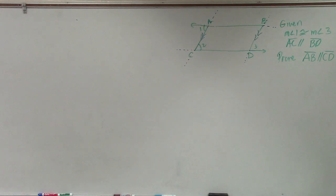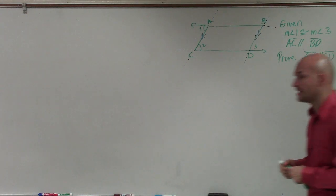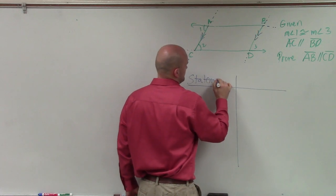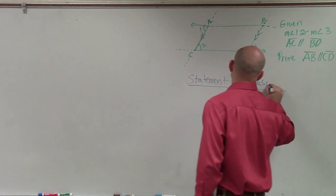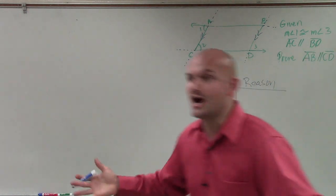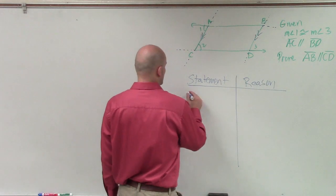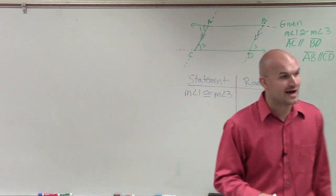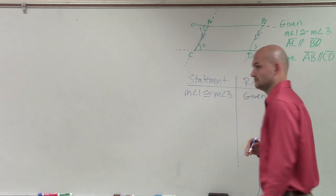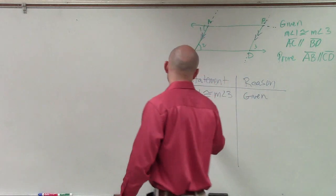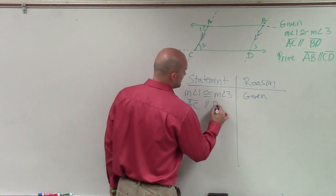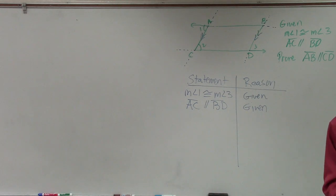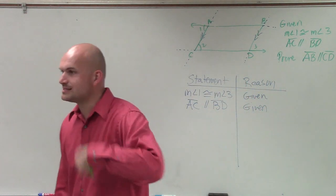So now what we're going to do is write a proof. We're going to create two columns — statement and reason. Remember, ladies and gentlemen, the first thing we can do is take all the information that we are given and write it in there. So the first thing I'll write is: measure of angle 1 is congruent to measure of angle 3 — reason: given. We're also given that line AC is parallel to line BD — reason: given. Do you guys see how easy starting off the proof can be? Take your initial information, write it down, and say it's given.